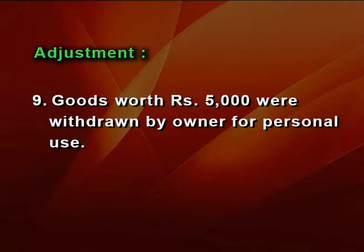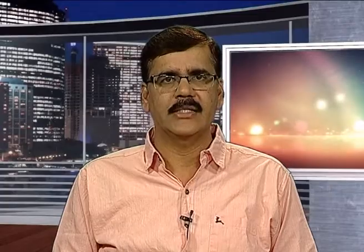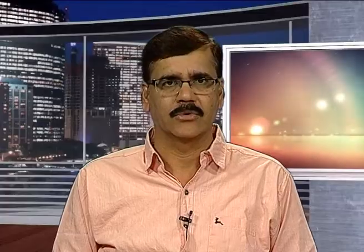The ninth adjustment: goods withdrawn by owner worth Rs 5,000 for personal use. Goods withdrawn by owner is treated as drawings. The first effect is that Rs 5,000 is deducted from capital in the balance sheet. The second effect: it is deducted from the value of purchases in the trading account, so Rs 5,000 is deducted from purchases.